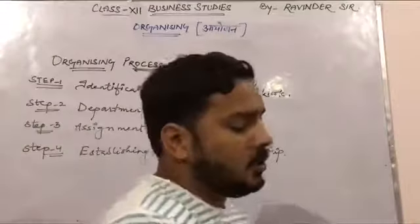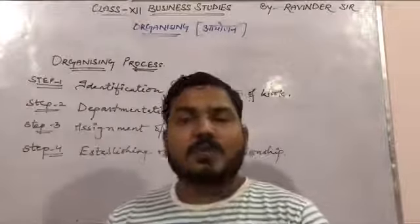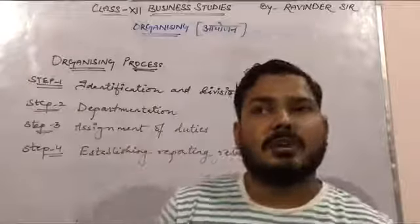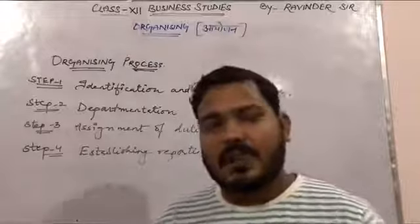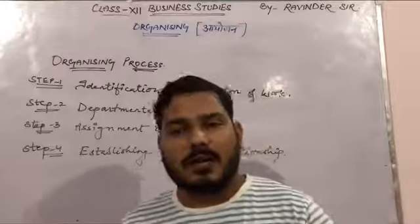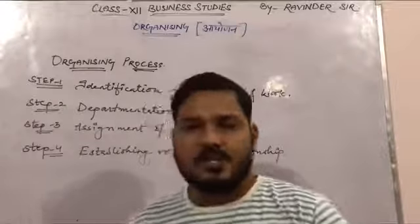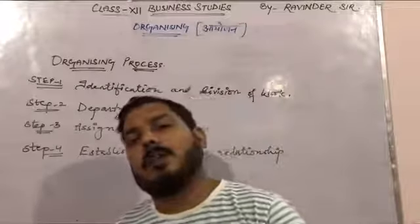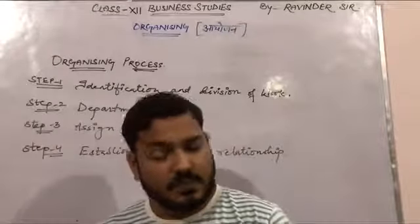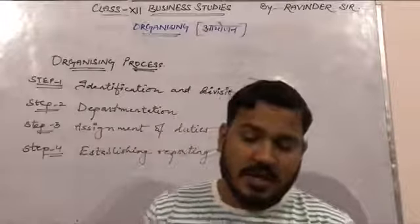The organizing process has basically four steps. The first step is identification and division of work. A manager needs to identify the total work to be performed. The total work is then divided into manageable activities, which we call jobs. So the whole work will be divided into jobs. This is a very important part of the organizing process.